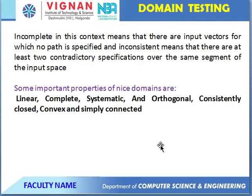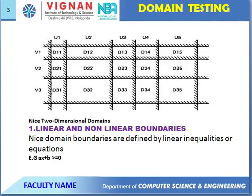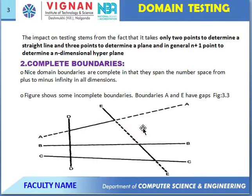Some important properties of nice domains: nice domains are linear and nonlinear, complete, systematic, orthogonal, consistently closed, convex, and simply connected. Linear and nonlinear boundaries: domain boundaries defined by linear equations, for example x + b ≥ 0, are linear boundaries. The impact on testing stems from the fact that only two points are needed to determine a straight line, and three points determine an n-dimensional hyperplane.